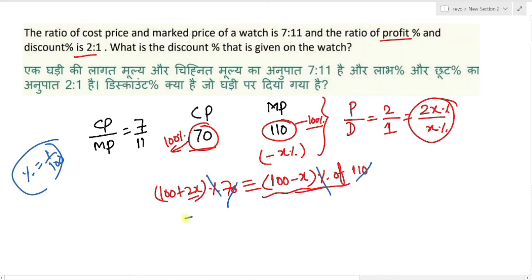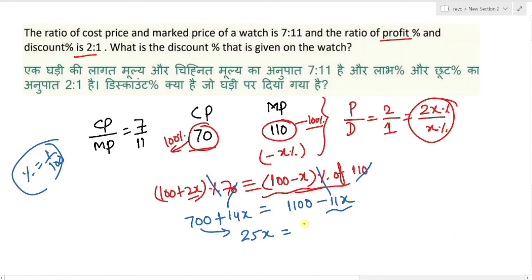Left side में मिलेगा 700 + 14x, right hand side में मिलेगा 1100 - 11x। 11x को left side में ले लो तो मिलेगा 25x = 400। तो x = 400 ÷ 25 = 16।